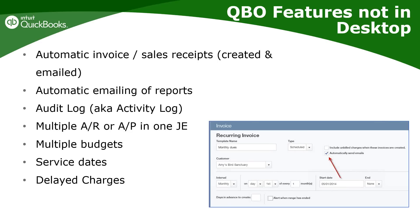You can also automate a sales receipt in QBO so it automatically charges the customer's credit card — for example, a fitness center billing monthly membership fees directly to cards. You do need signed permission from customers before doing this. Note that you cannot automatically charge a bank account, only a credit card. QBO also offers automatic emailing of reports, which is really useful for keeping business owners informed.